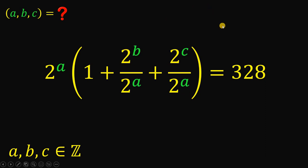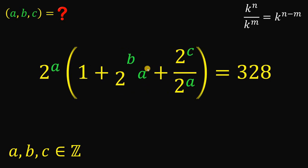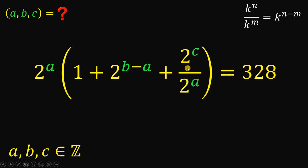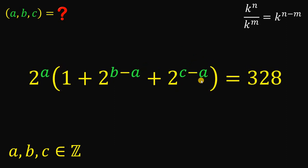Now, what we're going to do is to use this law of exponents: if we have k raised to N over k raised to M, it is equivalent to k raised to the power of N minus M. Therefore, 2 raised to B over 2 raised to A can be written as 2 raised to B minus A, and 2 raised to C over 2 raised to A can be written as 2 raised to C minus A.